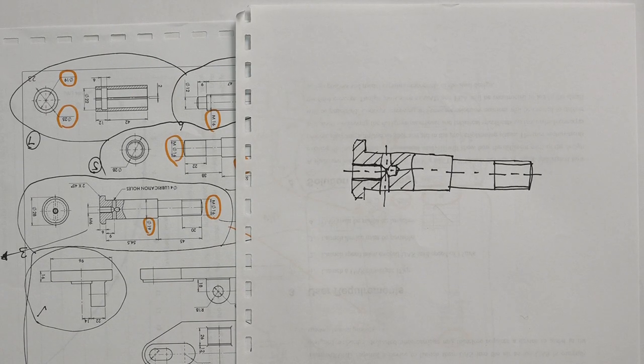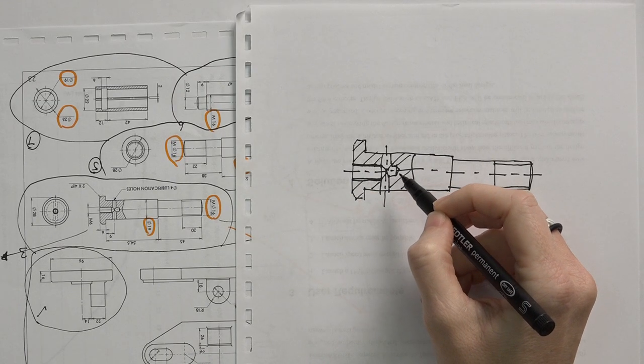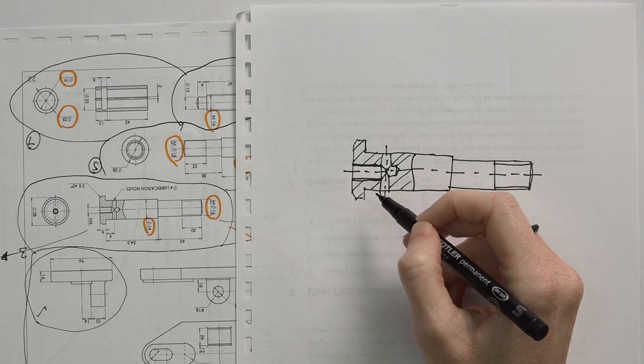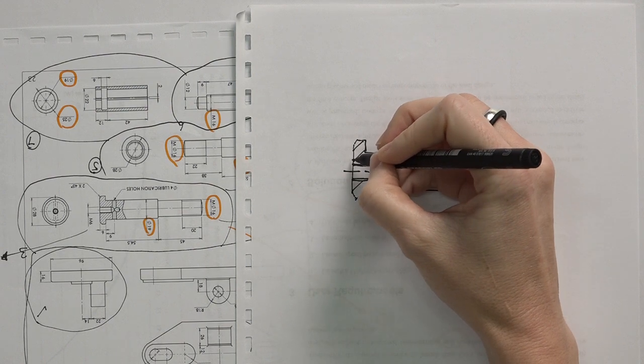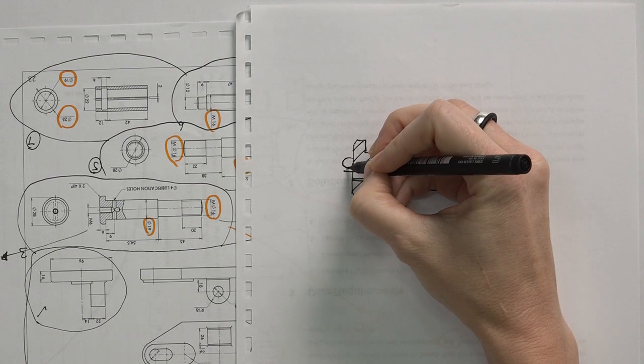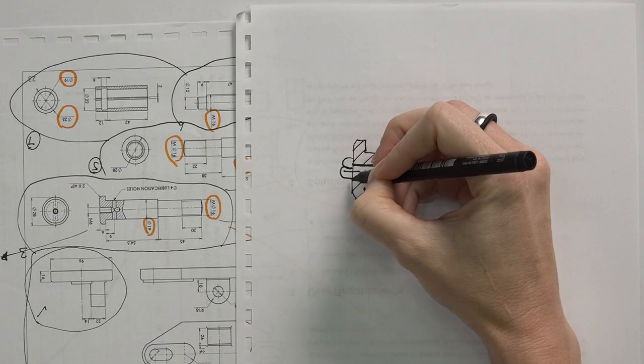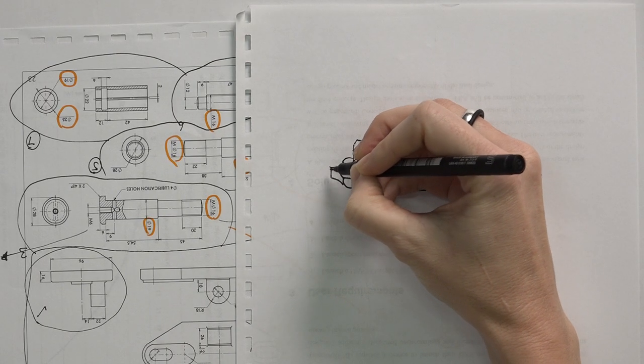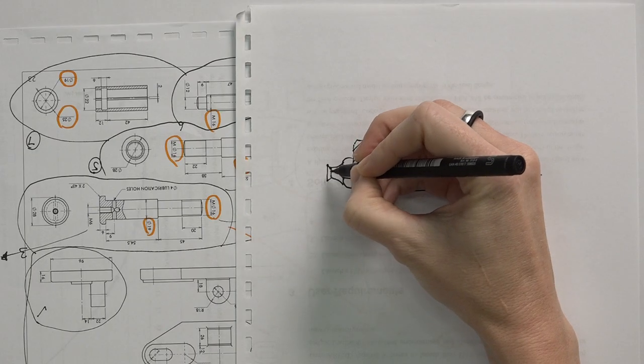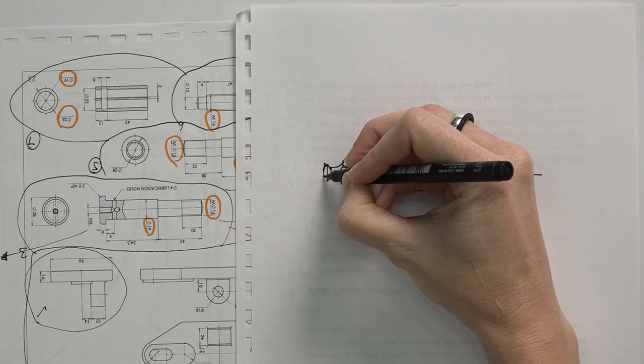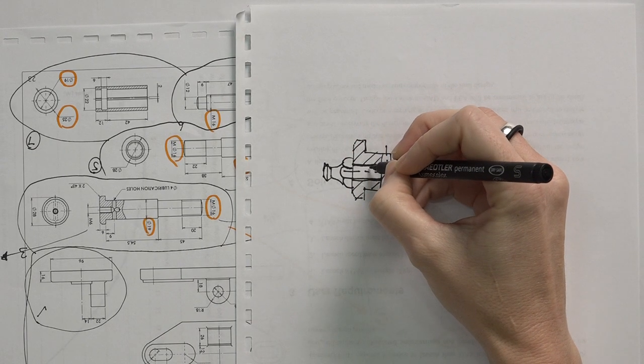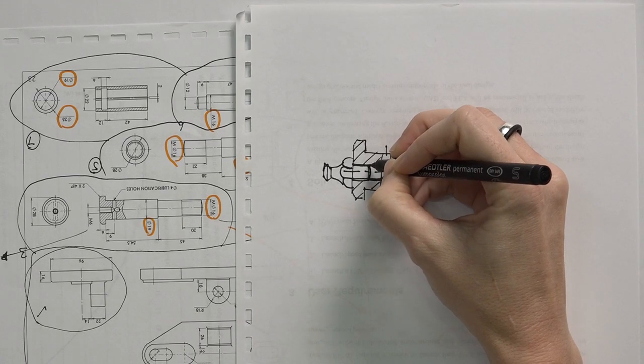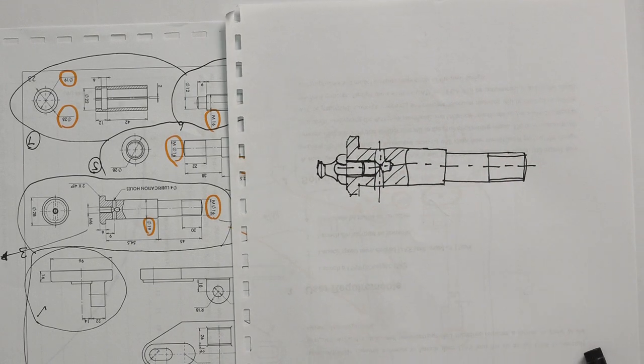Now at this stage, before you even start assembling components, because you know that this is a lubrication hole, you can already add your grease nipple on the top. You can already say, because I know the grease nipple is going to be here, I can already add it, and I just draw it in, making sure I have a place where the grease nipple ends.